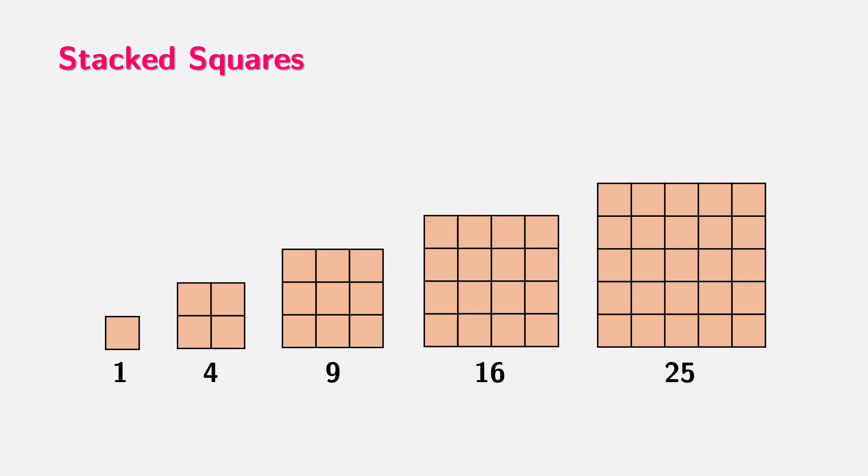Now, here we can see a series of shapes called stacked squares. Each shape is made up of smaller squares arranged into a larger square. Let's start with the first shape. It has just one small square. Next, we have a shape with four small squares arranged into a two by two square.